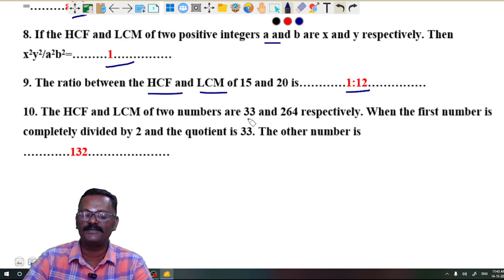Question 10: The HCF and LCM of two numbers are 33 and 264 respectively. When the first number is completely divided by 2, the quotient is 33. The other number is 132.